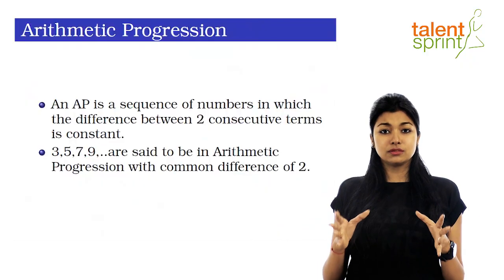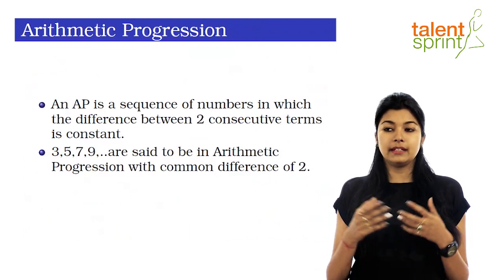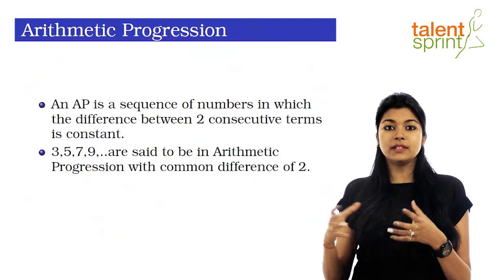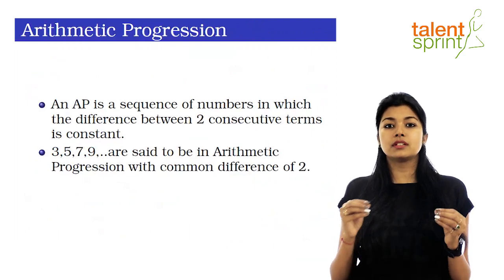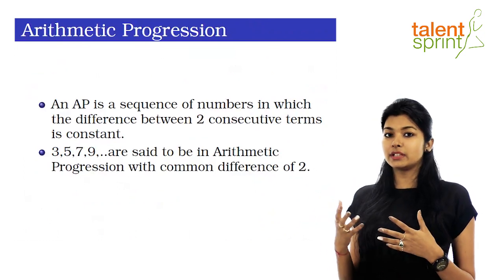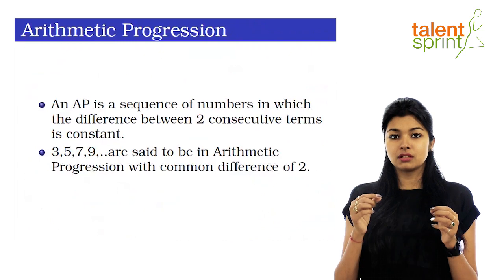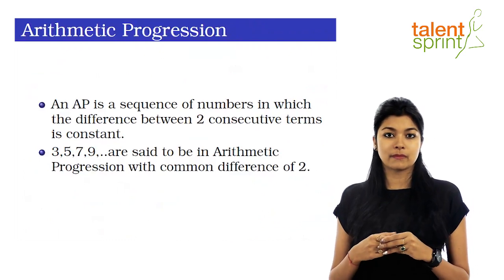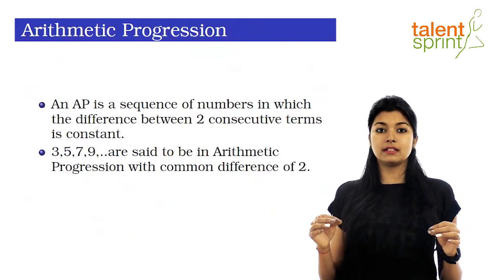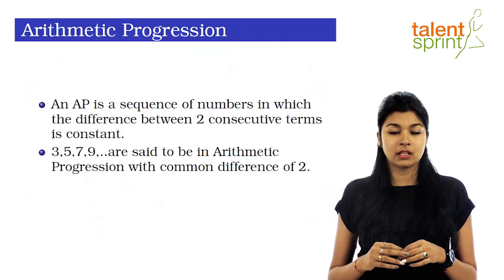Let me start by explaining arithmetic progression. An AP is a sequence of numbers in which the difference between two consecutive digits is always the same. As you can see on the screen, the example 3, 5, 7, 9 — the difference between each digit is 2. In this program we are going to find the missing element of an arithmetic progression.